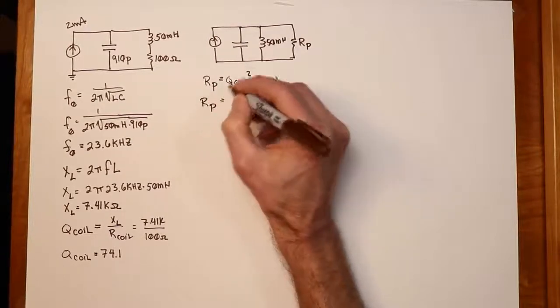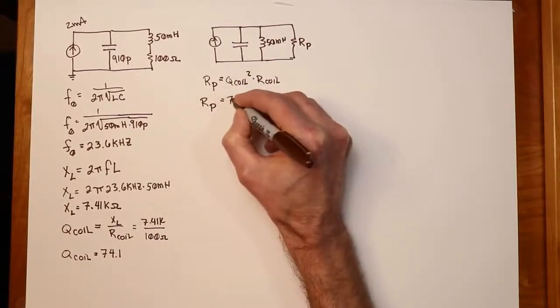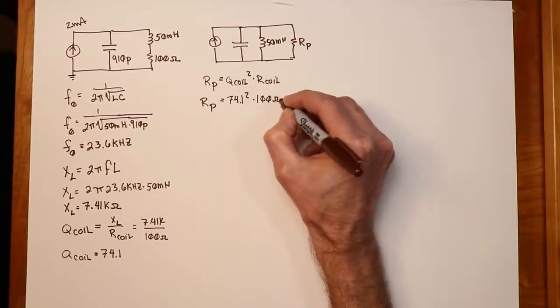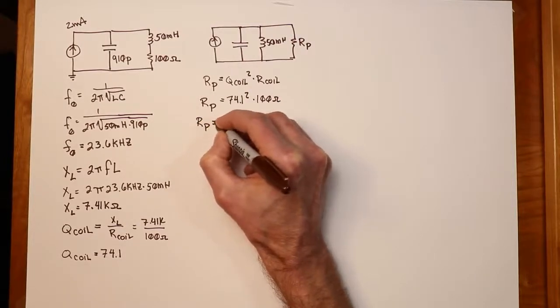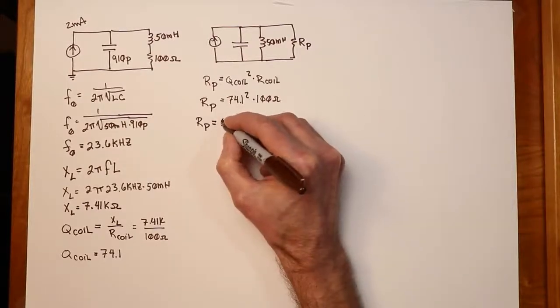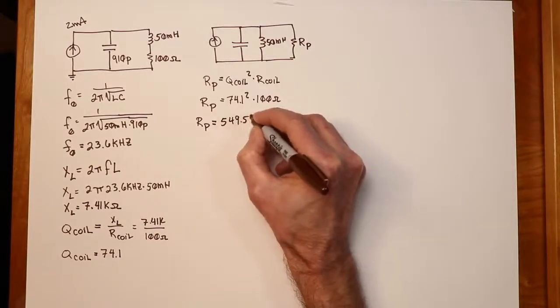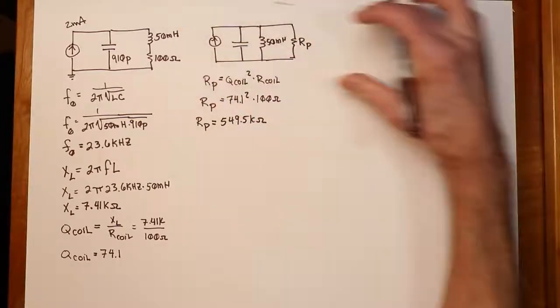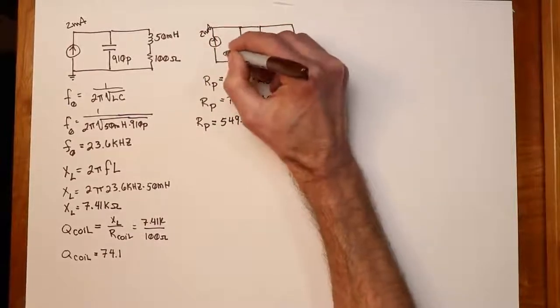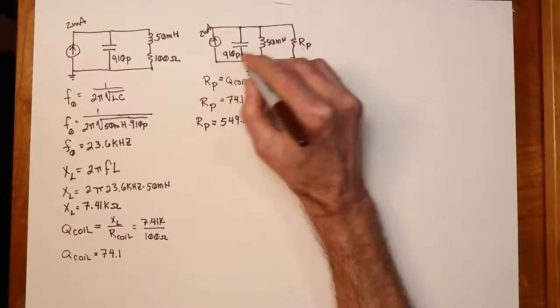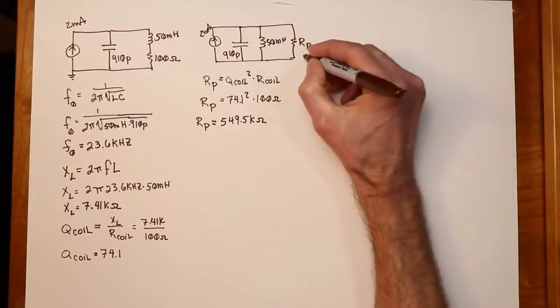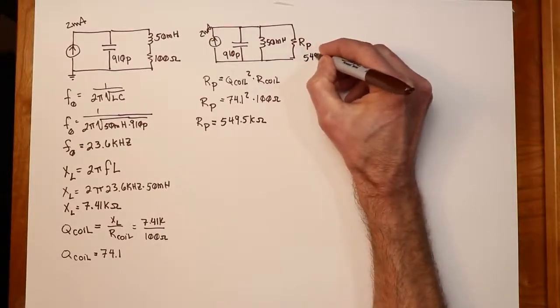So the transformed value of that, RP, is simply equal to Q coil squared times R coil. So RP over here, Q coil is 74.1, and R coil is 100 ohms. So RP works out to just about 550k ohms. It's actually, to four digits, 549.5k ohms. So this is basically what we have now. I've got this 2 milliamp. We've got the 910 cap over here. So these two reactive elements are both equal to 7.41k. And then we've got this RP over here that's equal to 549.5k ohms.